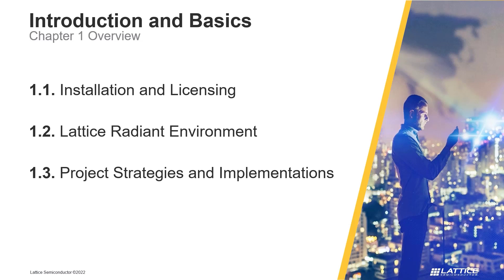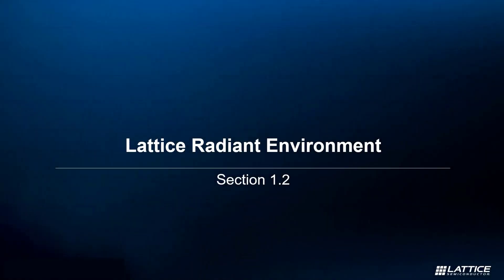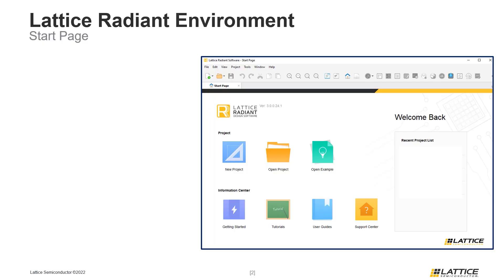In the third section of the chapter, Project Strategies and Implementations, we will review the basics for Radiant's project strategies and project implementations. Chapter 1, Section 2: Lattice Radiant Environment. In this section of the video series we will be defining some sections of Radiant's workspace environment. In order to create a new project, users will first have to launch Lattice Radiant. Once Radiant has opened, the first thing users will see is its start page.